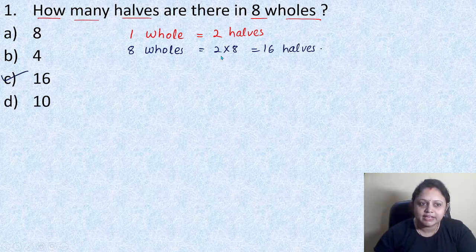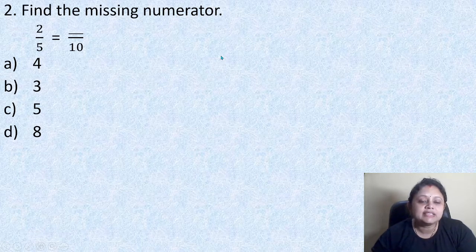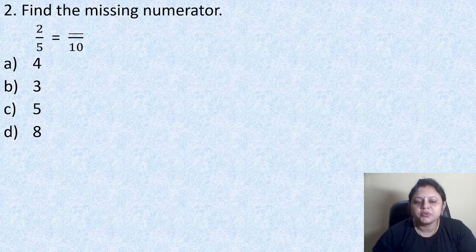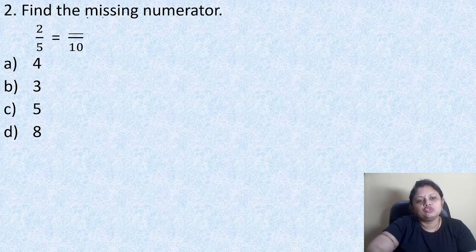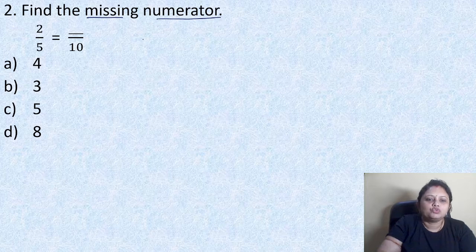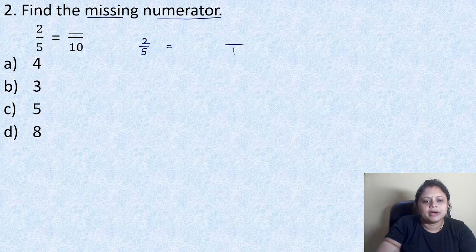Coming to the next question: find the missing numerator. 2 by 5 is equal to dash by 10. Option A: 4, B: 3, C: 5, D: 8. So we have to find the missing numerator. We have 2 by 5, that is equal to something by 10.